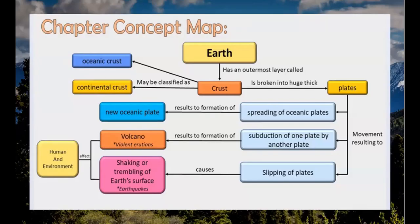In summary, the Earth has an outermost layer called the crust, classified as oceanic and continental crust. The crust is broken into huge thick plates whose movement results in spreading of oceanic plates, subduction of one plate by another, and slipping of plates. Spreading forms new oceanic plates; subduction forms volcanoes that can cause violent eruptions; and slipping causes shaking of the Earth's surface — earthquakes. Volcanic eruptions and earthquakes affect humans and the environment both negatively and positively.